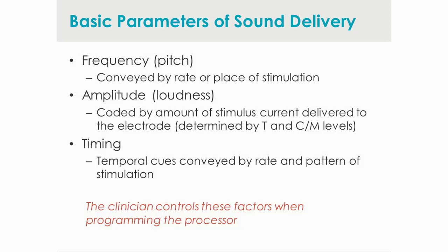Another important cue for speech recognition is amplitude or loudness. In a cochlear implant, we code loudness by delivering a current level to each electrode — a lot of current sounds loud, less current sounds softer. The third important parameter is timing. As speech changes over time, amplitude, frequency, and temporal cues — conveyed by the rate and pattern of stimulation — all change together. All three parameters work together to convey important speech recognition cues, and we have control over these factors when programming the patient's processor.